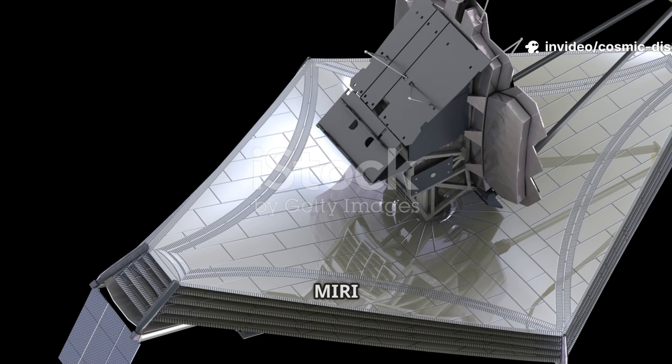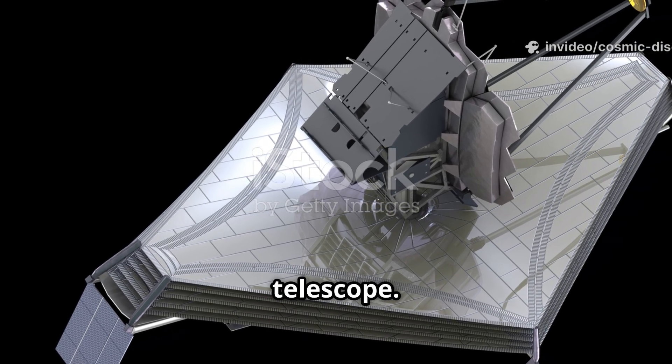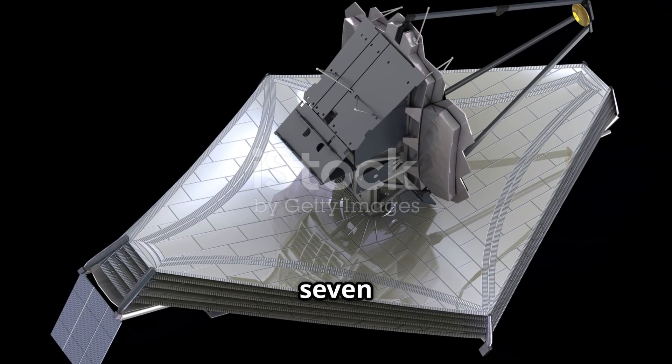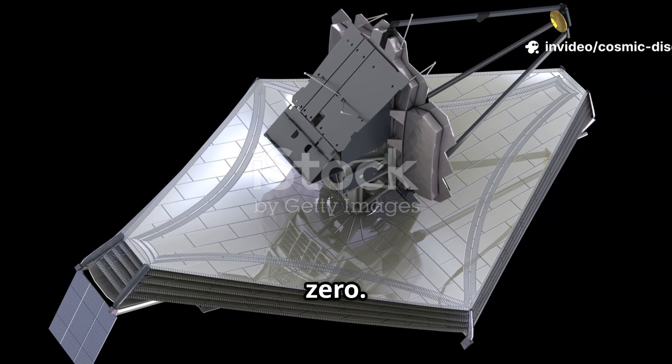To function, MIRI must be even colder than the rest of the telescope. It has its own special cooling system, a cryo-cooler, that brings its temperature down to just 7 degrees above absolute zero.